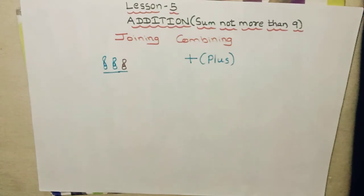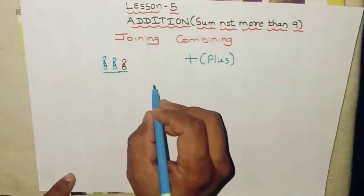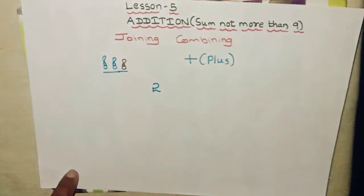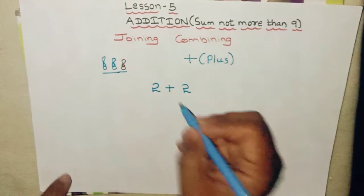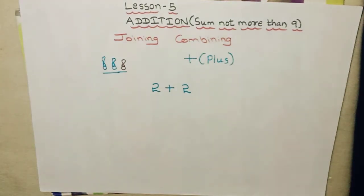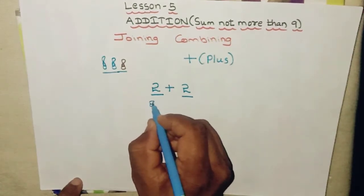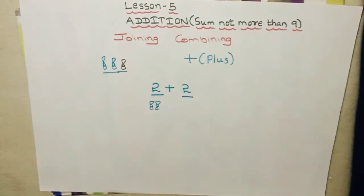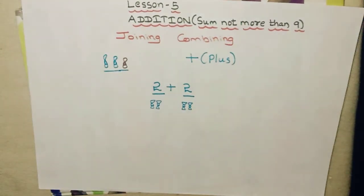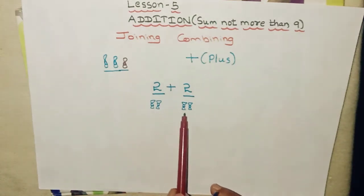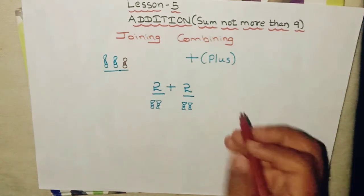Okay, we will do some small addition problems in this video. So how to write them? Say they give you a problem like this: two and two more — you have to add them, so you write plus in between. Assume you have two chocolates and your friend gives you two more chocolates. You can draw them — two chocolates, then two more chocolates given by your friend. Count them — how many do you have total? One, two, three, four.